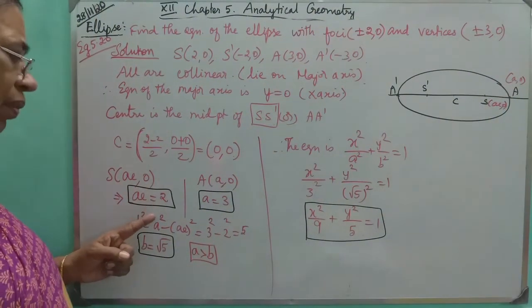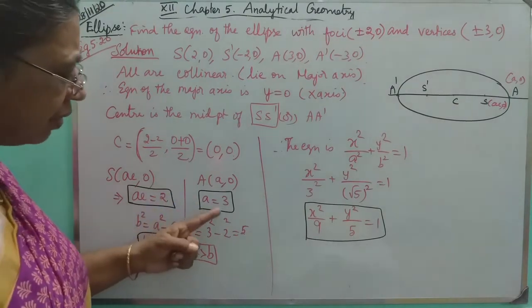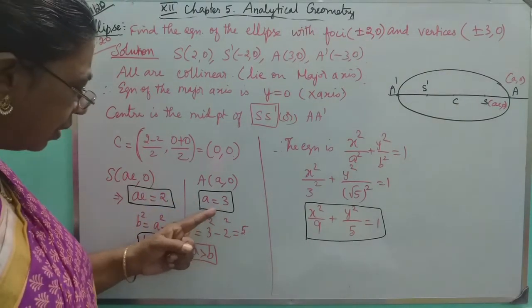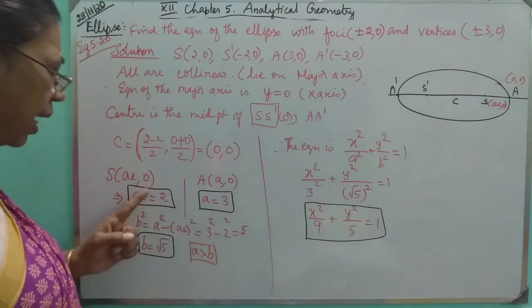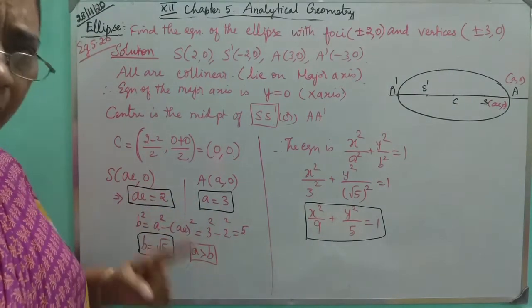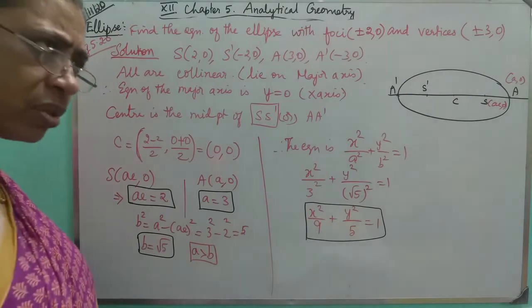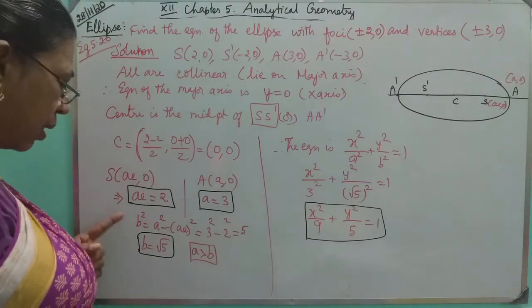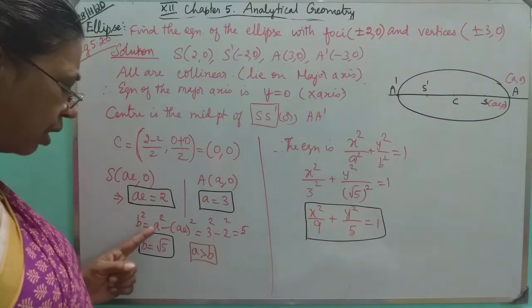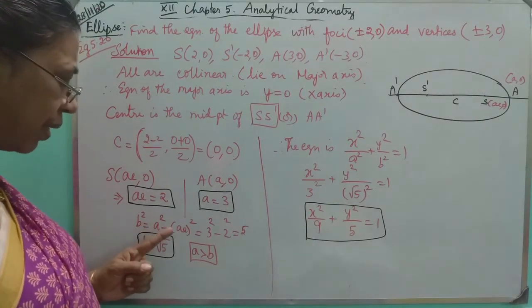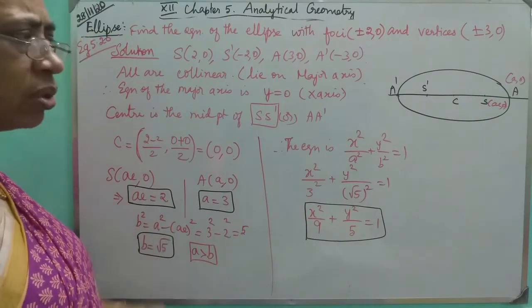So ae is 2, and a is 3. Now, what is the relationship between ae and b?